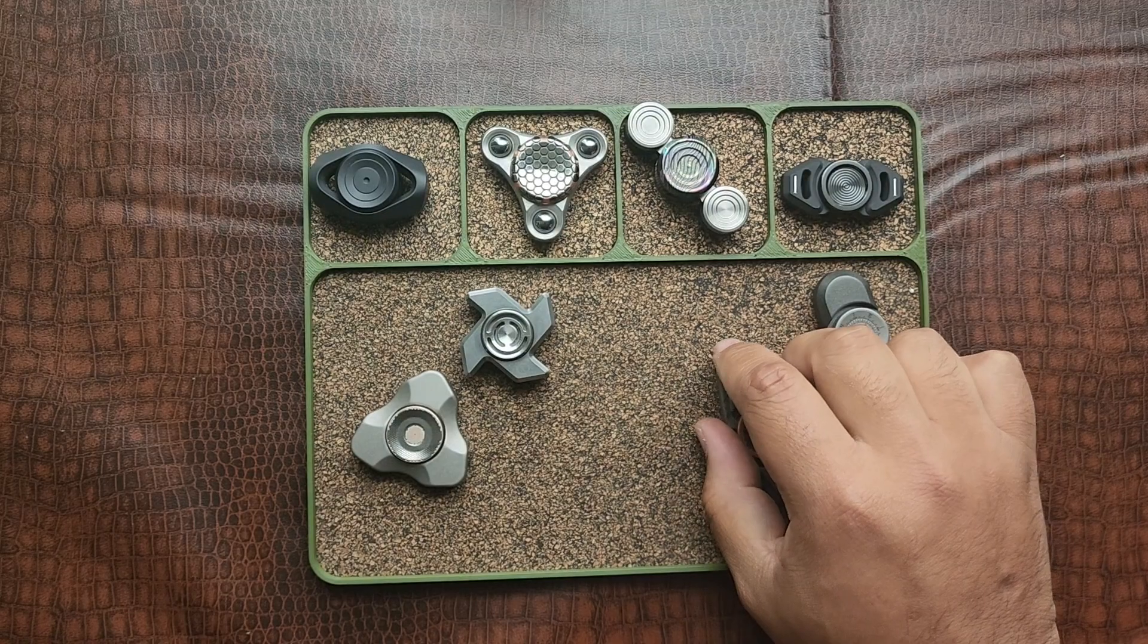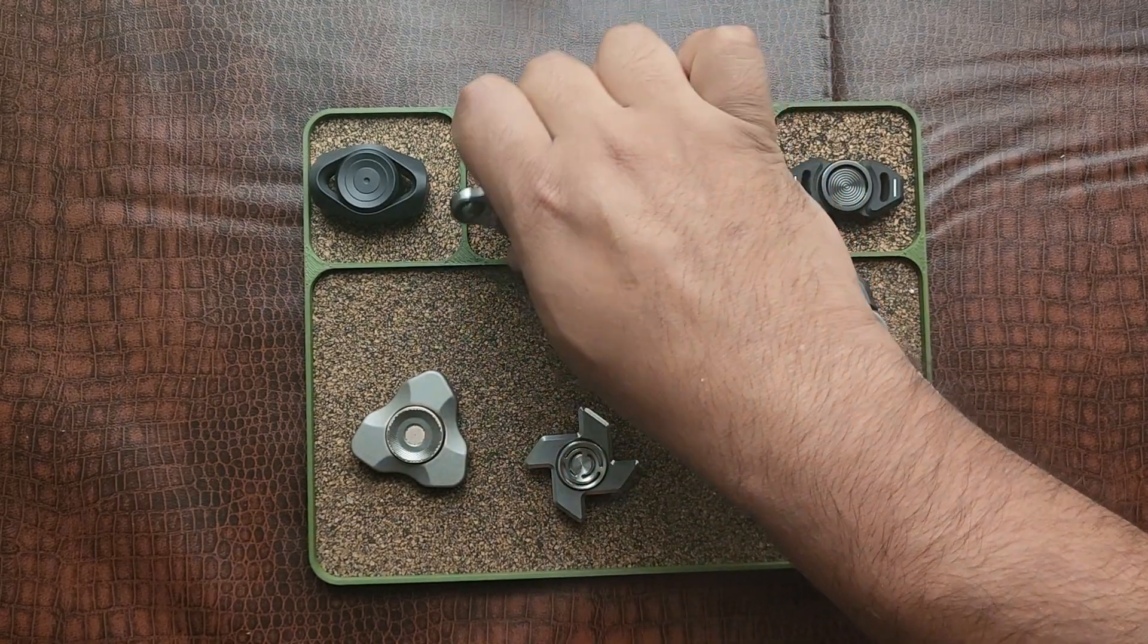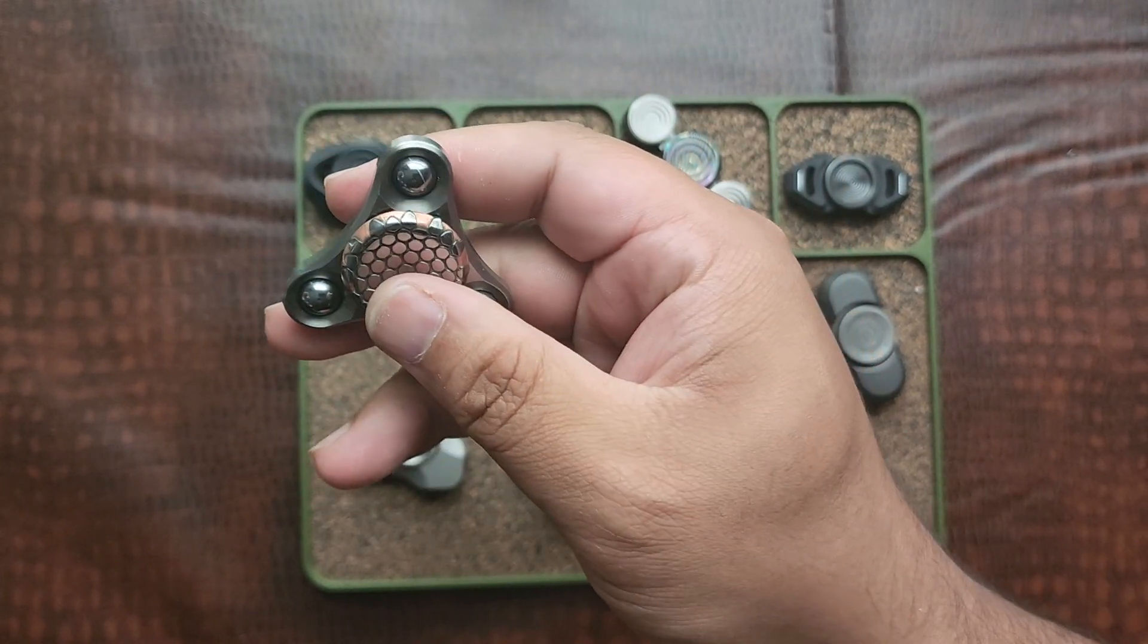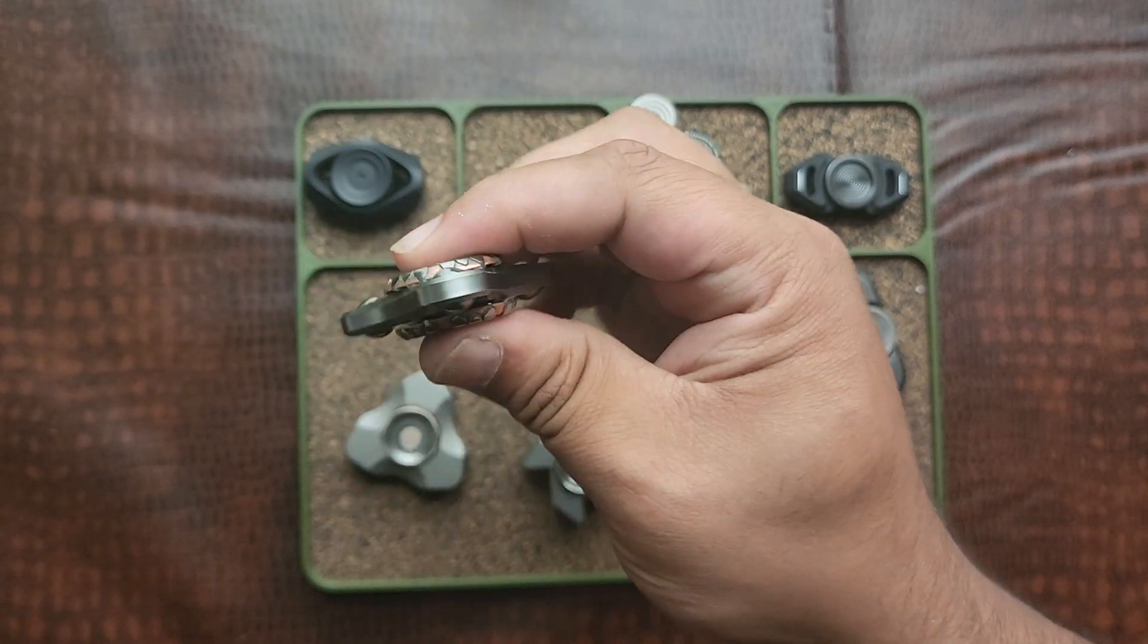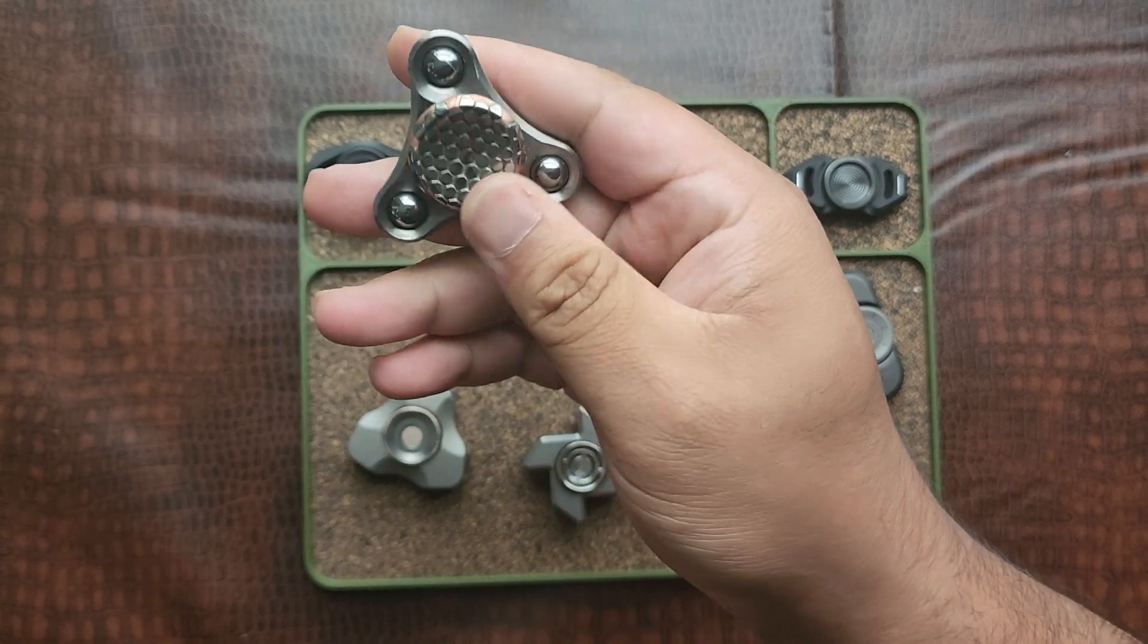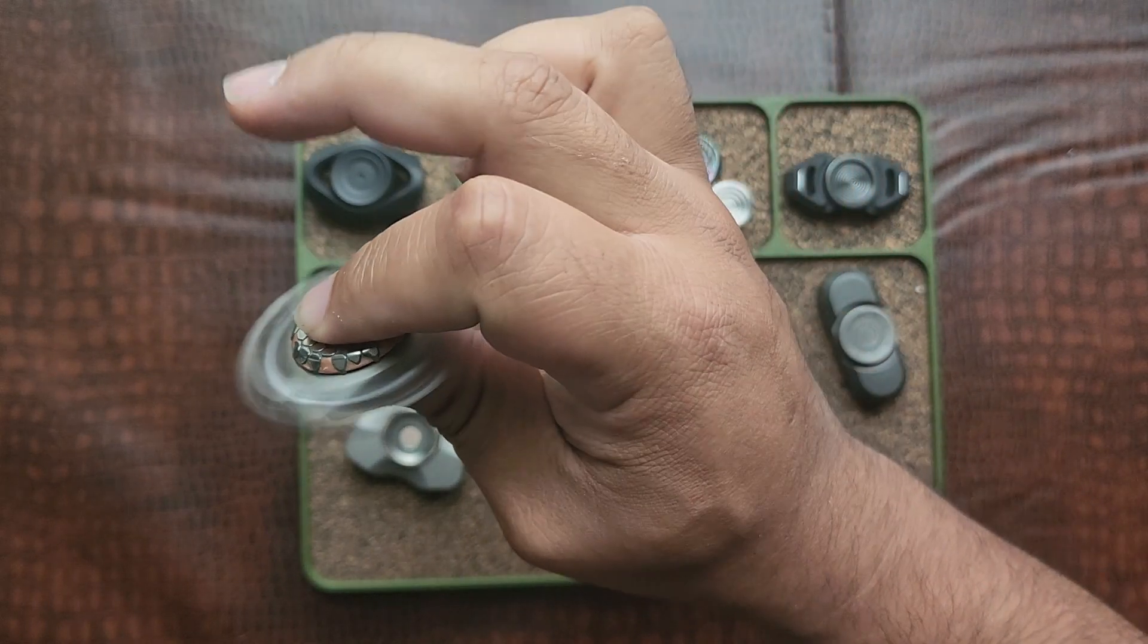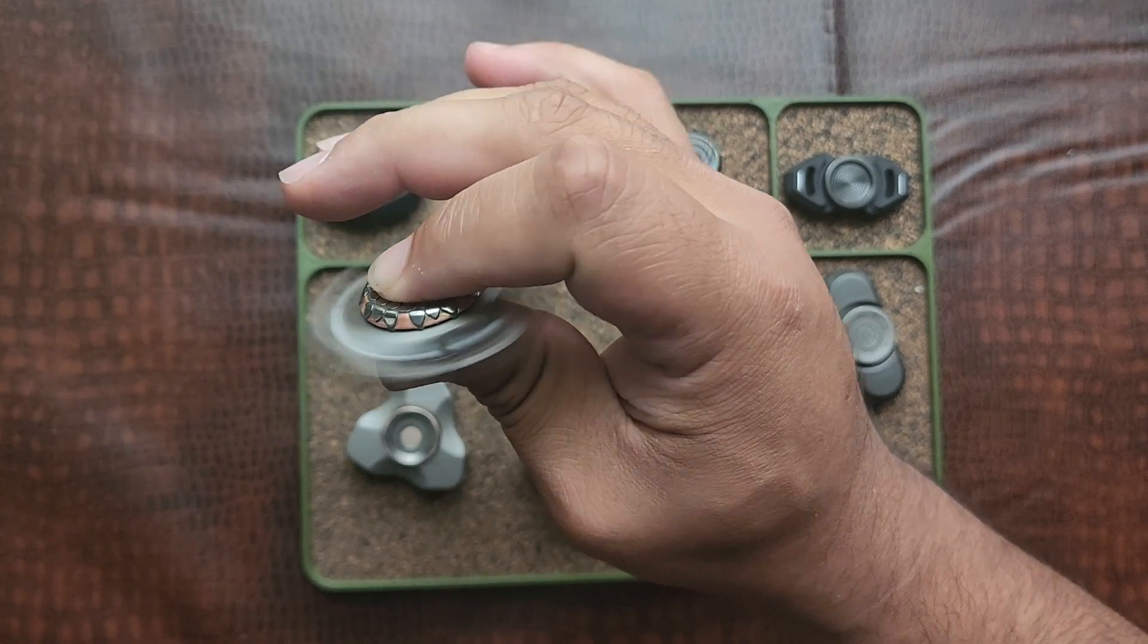This is my favorite tri spinner to do this with. Tri spinners are great for flicking and catching because of the arms, obviously. You've got more to catch. So this guy right here is just delightful. Because, oh, and I guess I should talk about the stopping motion.